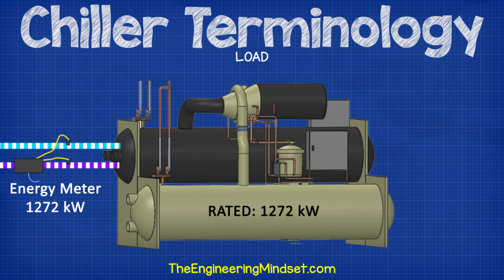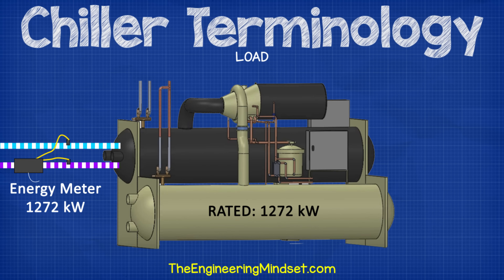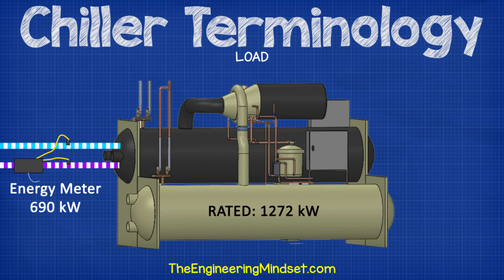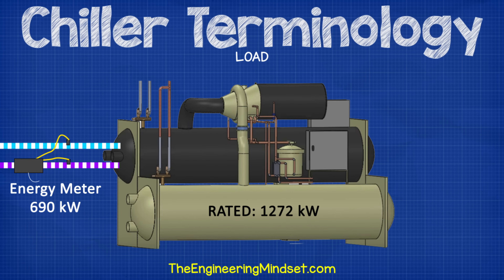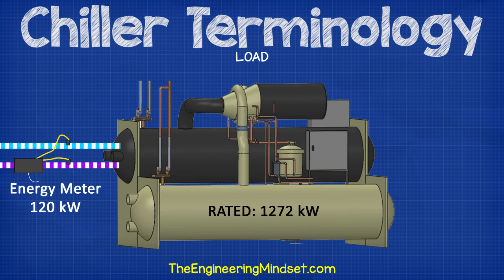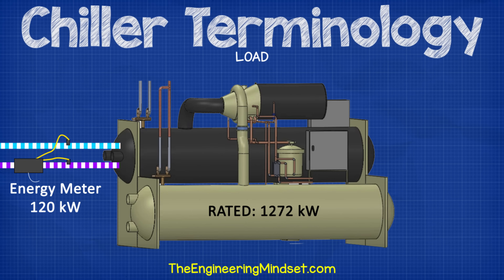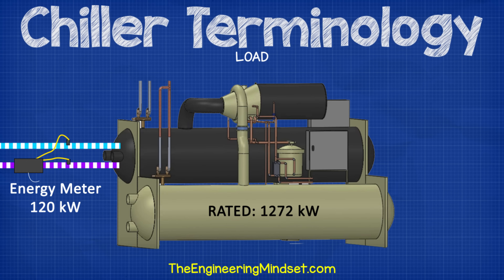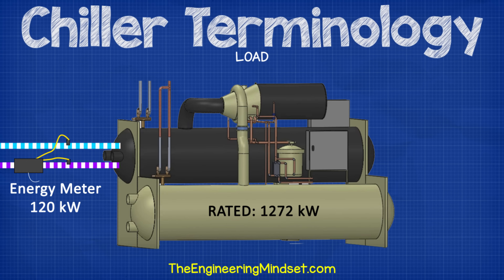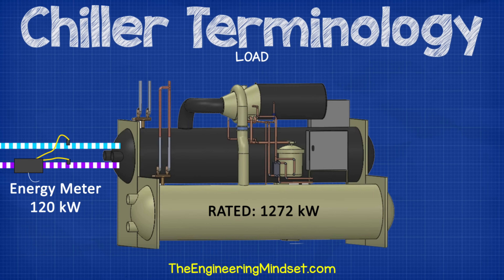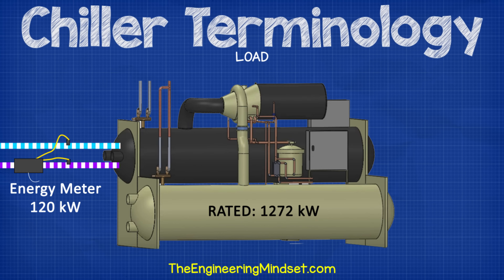Load. Load refers to the cooling demand on the chiller. Full load means that the chiller is operating at its maximum cooling capability, but this is only for around 1–2% of the year typically. Part load means the chiller is operating at less than its maximum capability — this is normal for most of the year. Low load means that the chiller is operating at very low capacity. Faults can often occur at these conditions, and chillers typically do not operate very efficiently at low load. If a chiller is operating at low load for long periods throughout the year, it is likely oversized and alternative options should be investigated. Cooling load is typically measured in BTUs, refrigeration tons, or kilowatts.